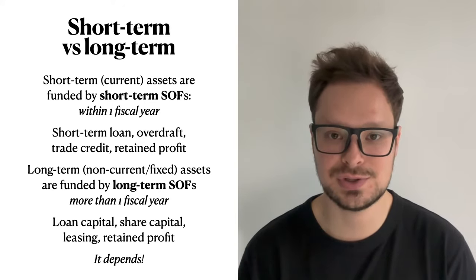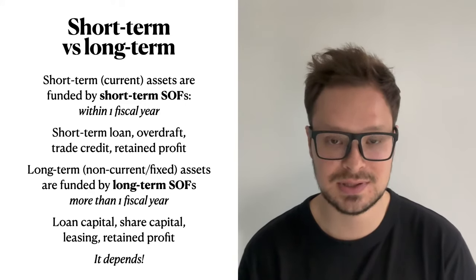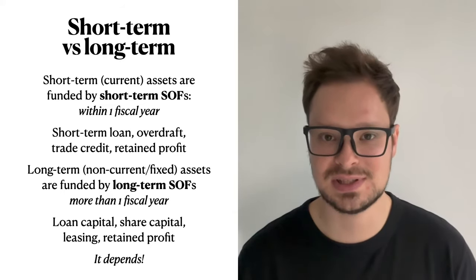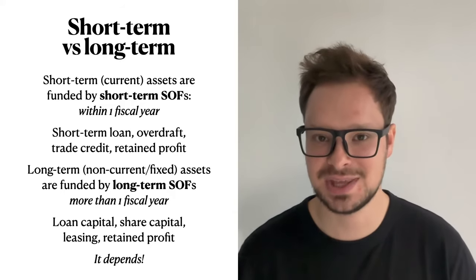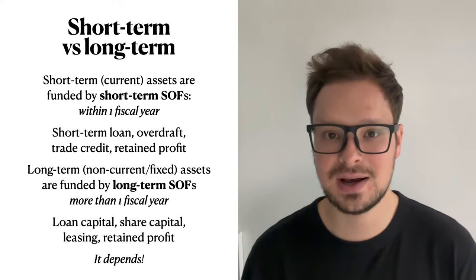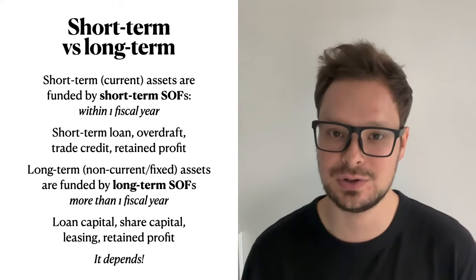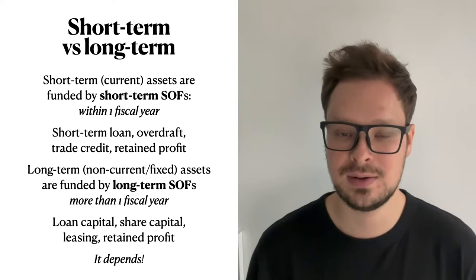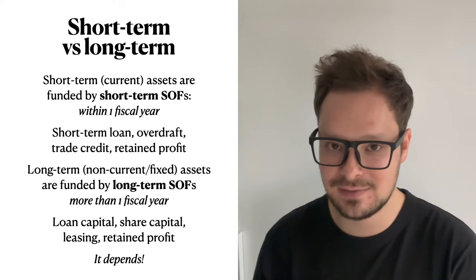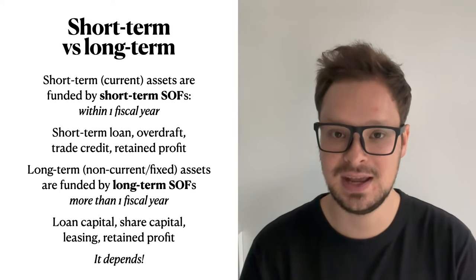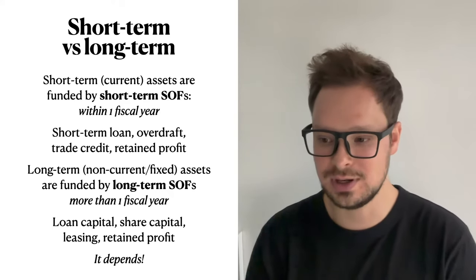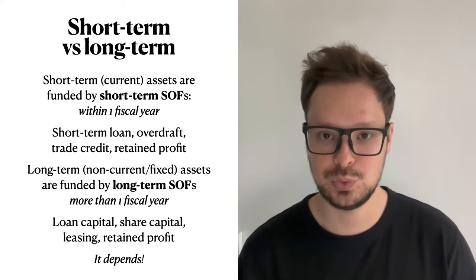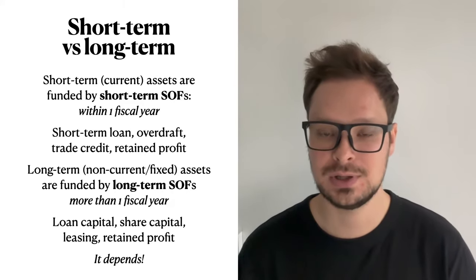Common examples of long-term sources of finance are share capital, loan capital, leasing, and retained profits — again, depending on the time scale, retained profits can be either short-term or long-term. For other sources we learned in parts one and two, it's too nuanced to categorize definitively — you have to look at each situation individually and see if it's within one year or more than one year, and make your own judgment.